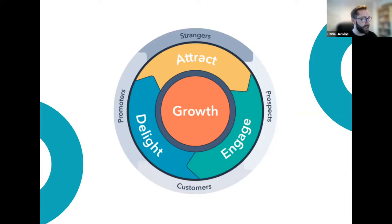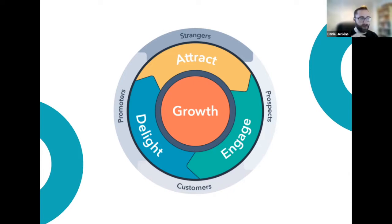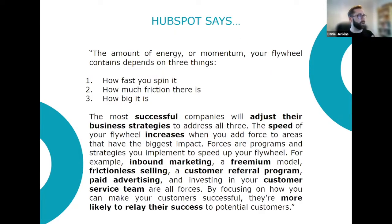This matters because the digital marketing landscape is changing. To be competitive in search results is hugely challenging in 2022 — perhaps more than ever. PPC and Google Ads could be generating even higher costs. So if we can engage people more, give them the right message at the right time, and keep them excited pre and post-sale, we can generate more business. HubSpot says the momentum your flywheel contains depends on three things: how fast you spin it, how much friction there is, and how big it is.